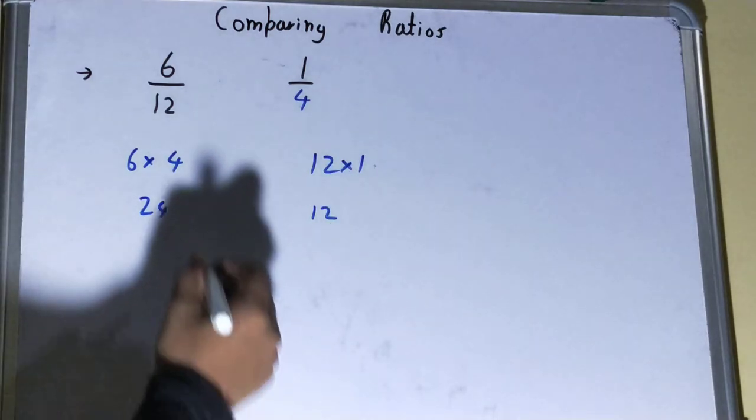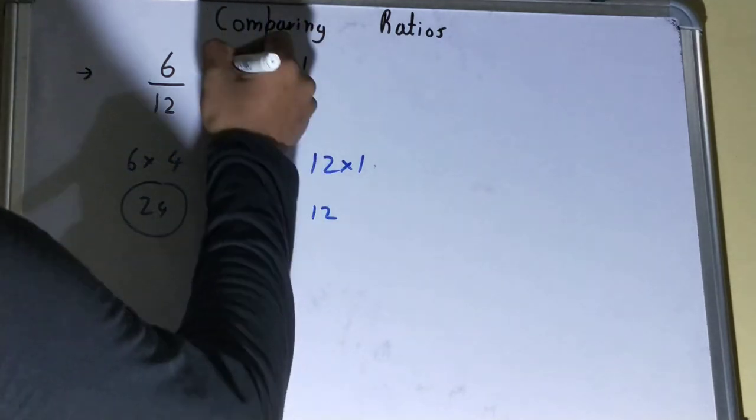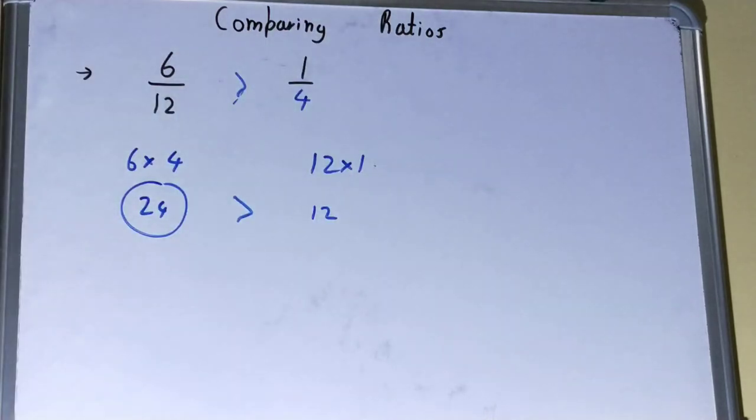Now we can say that this value 24 is clearly greater than 12. So we can say this ratio 6 by 12 is greater than 1 by 4. So this is how we can compare two given sets of ratios. So if you like the video please click the like button, consider subscribing, and thanks for watching.